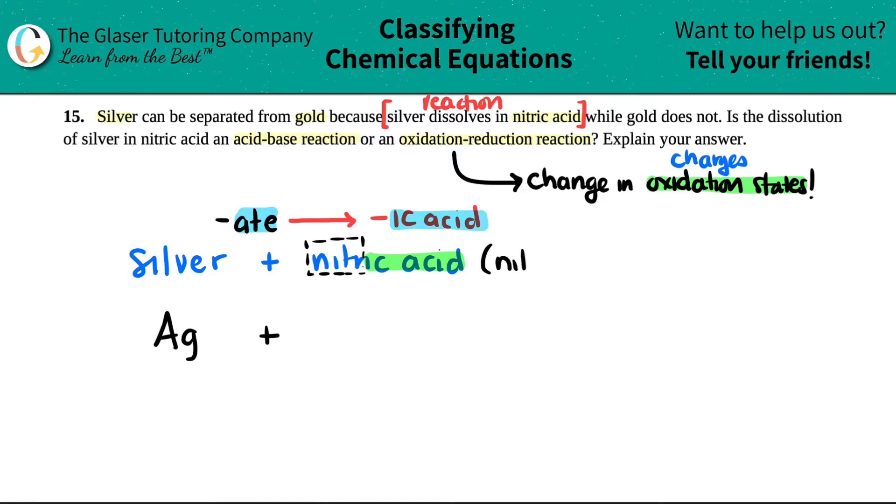Nitrate is a polyatomic. We have to memorize our polyatomics. Nitrate is NO3 with a minus one charge. Now, if it's an acid, that means that it had its H component added. Remember an acid. So I'll put it over here. An acid has to have an acidic hydrogen, which is called a proton. H plus is called a proton. We'll just call it H plus for now.